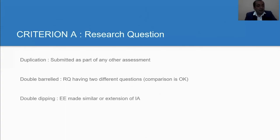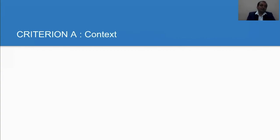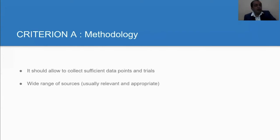Then double dipping. What happens is that students are doing IA and then students are thinking, let's extend this IA and make it more rigorous so it will be converted into extended essay. That should not be the case. As a supervisor, you need to look into it that it should allow collection of sufficient data points and trials.